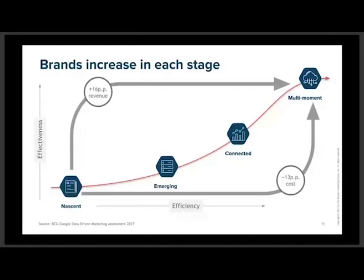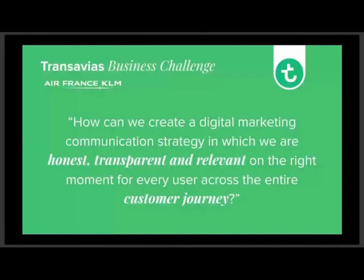The second big issue was communicating prices like '39 euros' because their prices are yielding — based on load factor, flight fullness, and how far ahead the date is. But the communication price didn't match the actual price: you'd see a banner for 39 euros, click through, and see 150 euros. That disappointment was something they wanted to get away from — but it's not easy when prices are dynamic.